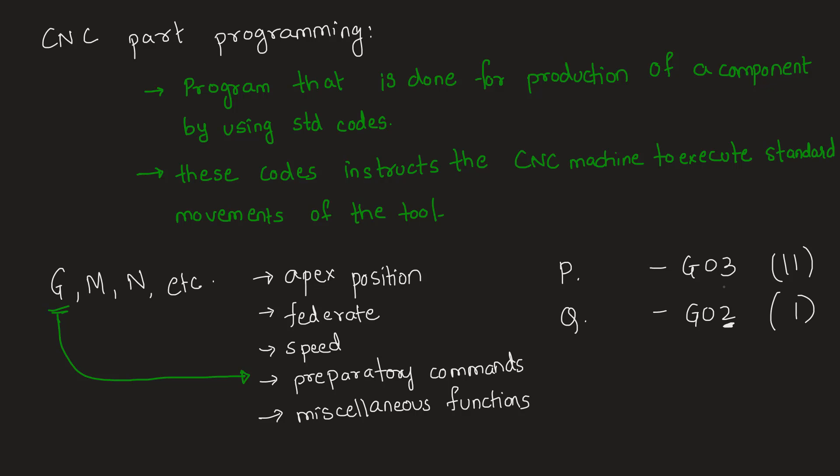And the opposite direction, which is counterclockwise, has the number 03 associated. So this order you can remember logically: clockwise is G02 and counterclockwise is G03, both being the preparatory command to execute circular interpolation.